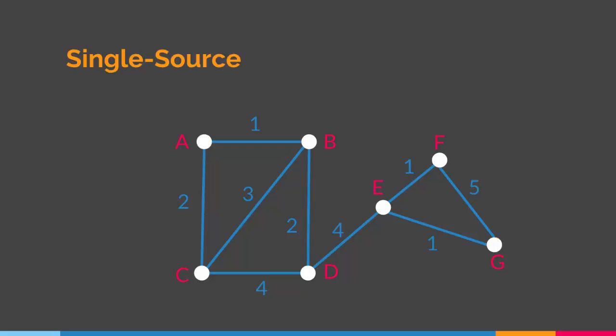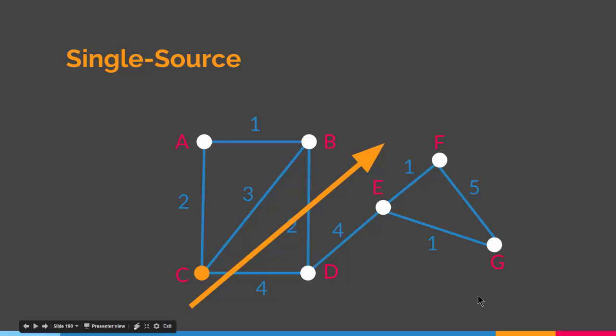The single source shortest path problem involves pinpointing a vertex to be your source and then finding the shortest path from your source to all the other vertices. So if our source is C, we find the shortest path between C and A, C and B, C and D, C and E, C and F, and C and G. The paths originate from the source and head to the rest of the vertices.